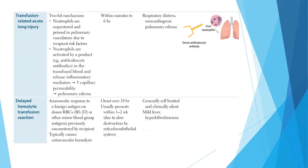Transfusion-related acute lung injury (TRALI) is one of the most important transfusion reactions. There are two hit mechanisms: neutrophils are sequestered and primed in the pulmonary vasculature due to recipient factors, then activated by anti-leukocyte antibodies in the transfused blood, releasing inflammatory mediators that cause increased capillary permeability and pulmonary edema. It occurs within minutes to 6 hours; onset after 6 hours is generally called delayed pulmonary contusion. Delayed hemolytic transfusion reaction is an anamnestic response to foreign antigens on donor RBCs, typically causing extravascular hemolysis, onset over 24 hours usually within 1-2 weeks, and is generally self-limited and clinically silent.